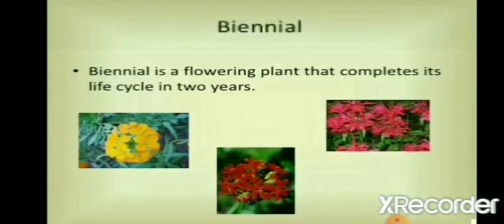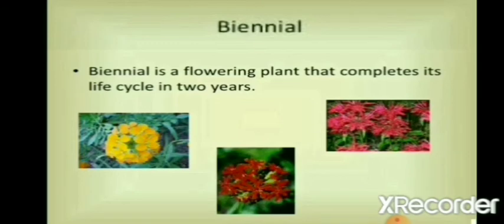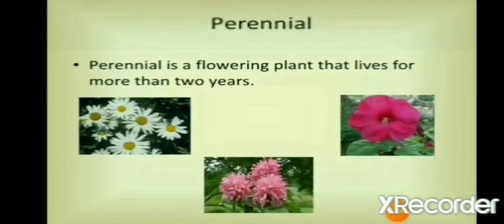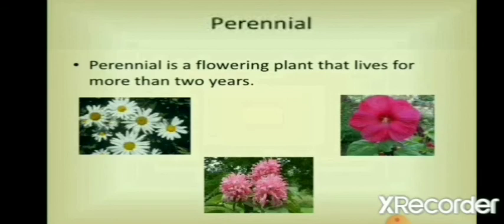Biennial flowers have a lifespan of two years. They grow to full size in the first year and produce flowers and seeds in the second year. After that, they die. For example, carnation, sweet William, hollyhock, etc. Perennials have a lifespan of more than two years and they bloom every year. For example, rose, lily, etc.